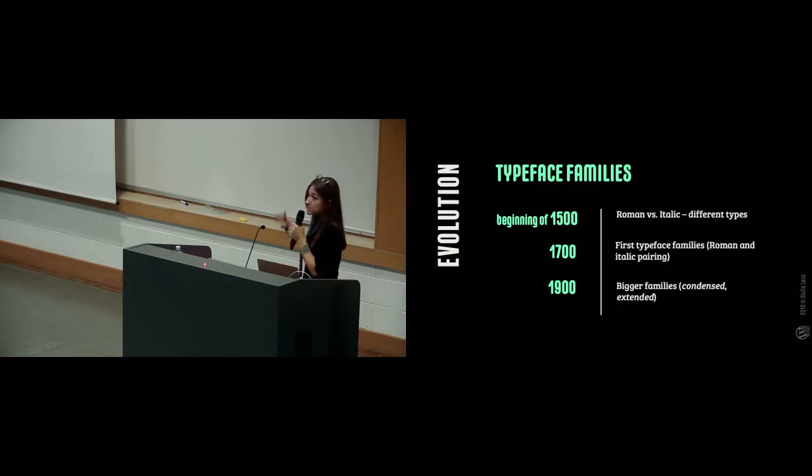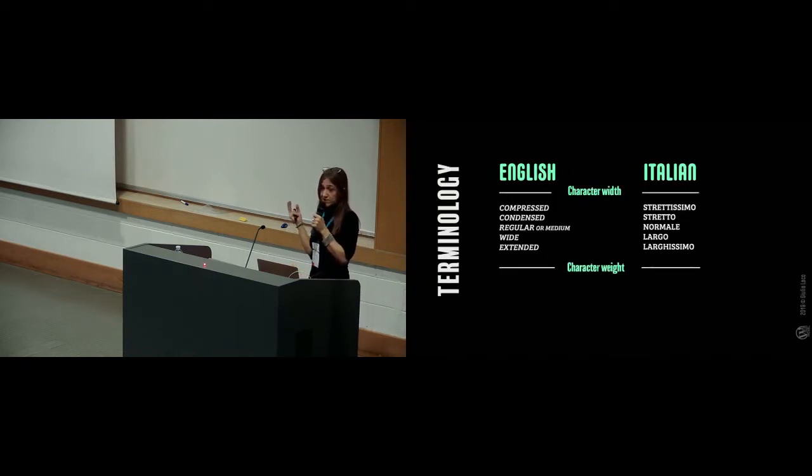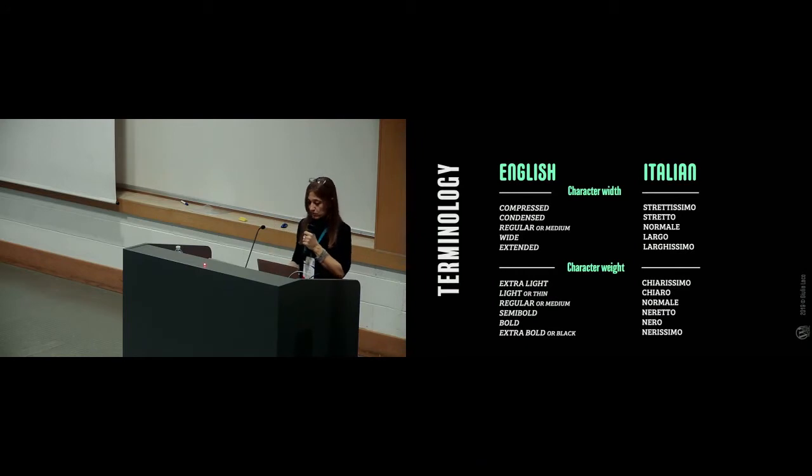And then we have the typeface family. It's a nice concept to illustrate variable fonts, because the typeface family is something that a type designer has put together under the same name. But it happens by history. Everything we know about typefaces and fonts comes from a history, five centuries of history. At the beginning of the press era, the Roman and italic versions weren't on the same family and on the same page. You have to wait a couple of centuries to have this pairing in a typeface. And even more, 200 years later, to have bigger families with extended version of a font, a compressed version, and things like that.